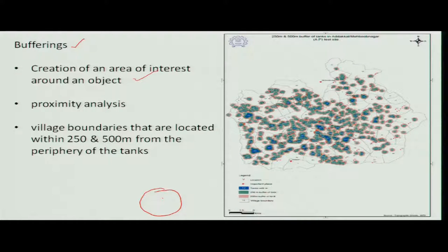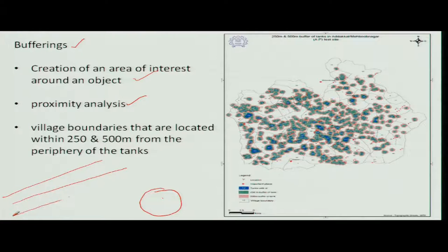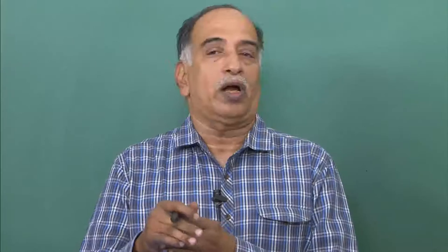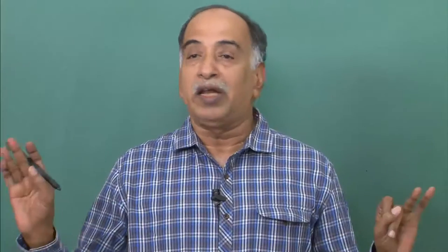This is also known as proximity analysis. For example, you have a road and you want to know how many houses are within 10 or 20 meters on both sides of the road. This type of information is needed when you are dealing with environmental issues and many other related problems.